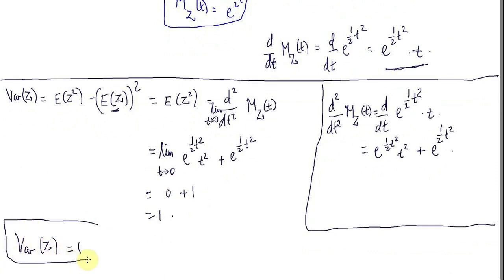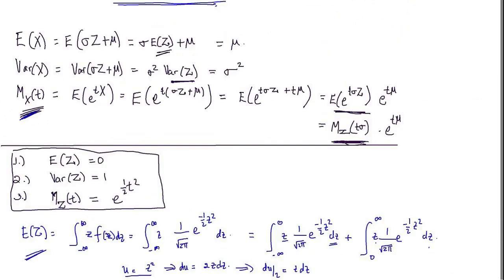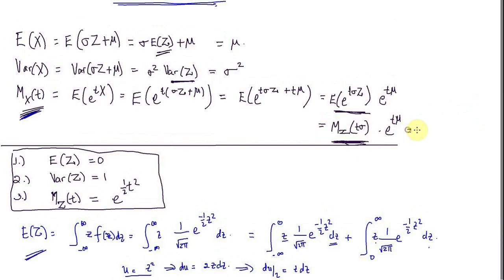Using what we found, the moment generating function of a general normal random variable X is e to the power of t mu plus one half sigma squared t squared.